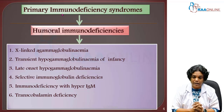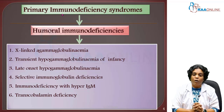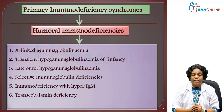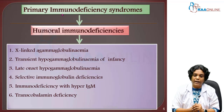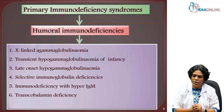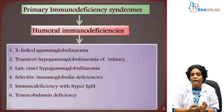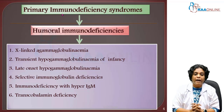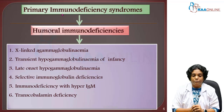The second is transient hypogammaglobulinemia of infancy, where there will be late synthesis of immunoglobulins leading to recurrent infections in infants. The third is late-onset hypogammaglobulinemia, also called common variable immunoglobulin deficiency, which occurs during the third or fourth decade of life.